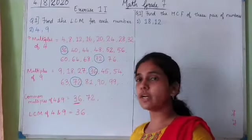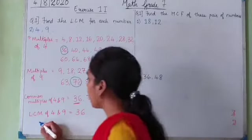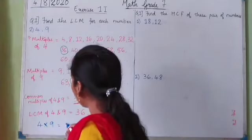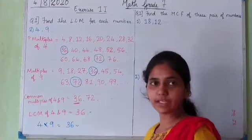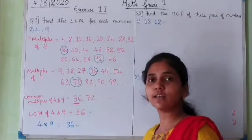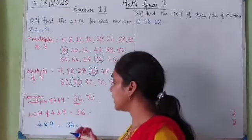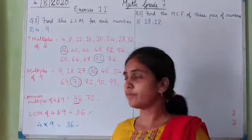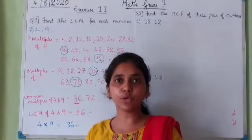Using the short method: 4 multiplied by 9 is 36, confirming the LCM is 36. This is the short way of finding the LCM of two numbers whose product gives their least common multiple.